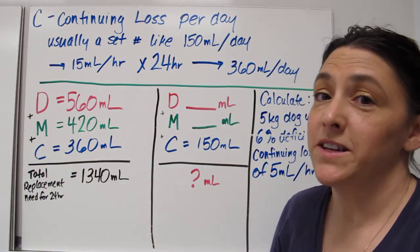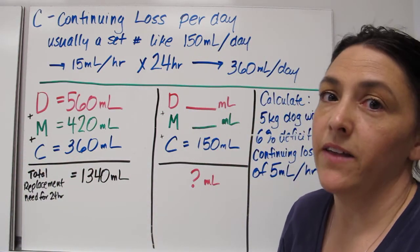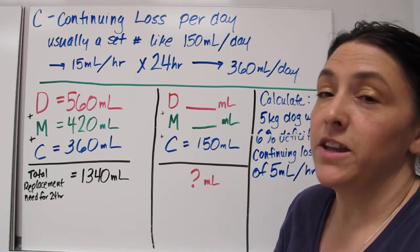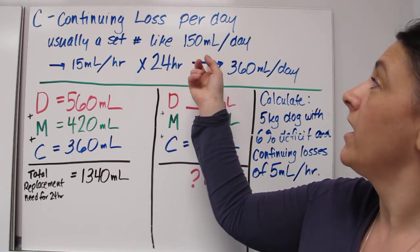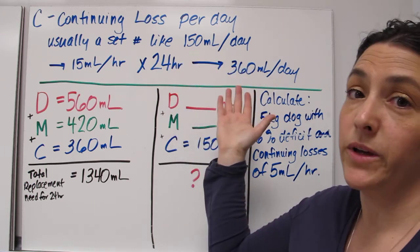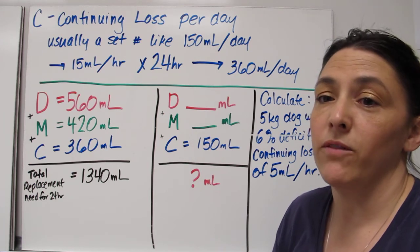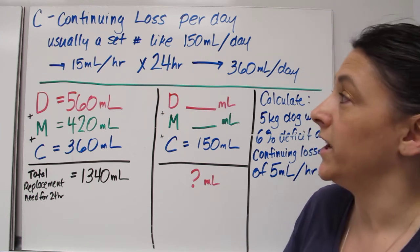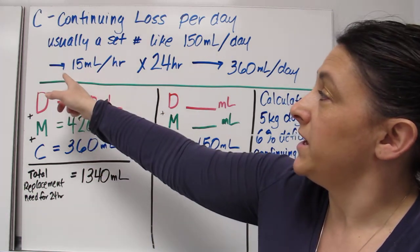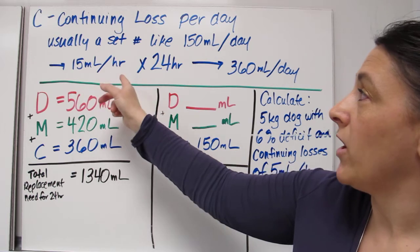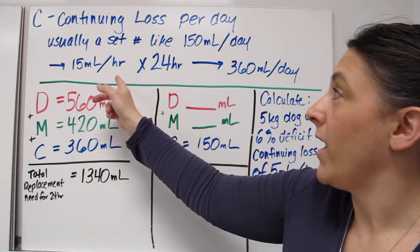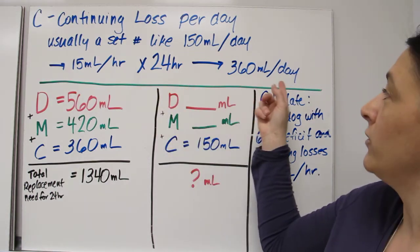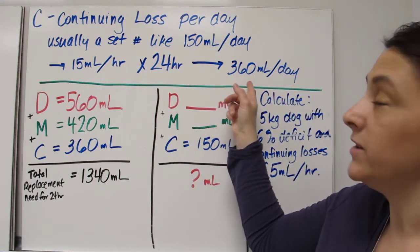Now the last part of our run DMC equation is C and this is continuing losses. Generally, this is calculated by the veterinarian. He may say that you have 150 mL per day of continuing losses. Continuing losses take into account vomiting, diarrhea, if they're not drinking, how much they're urinating. You can also see it as 15 mL per hour. If you see it as 15 mL per hour, you're going to need to times it by 24 hours to get your amount per day. So that's 360 mL per day.